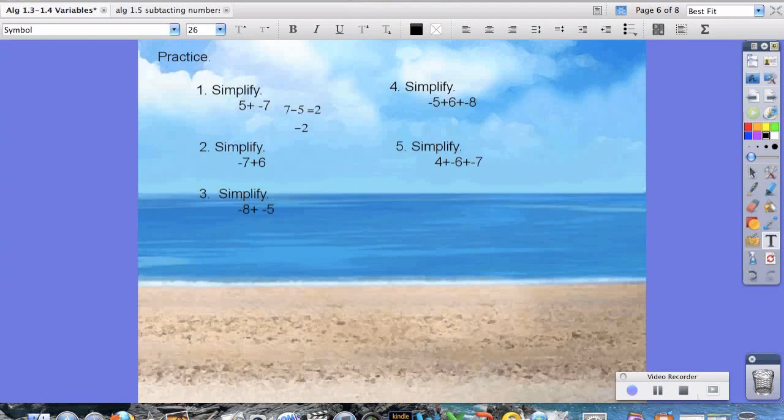Number 2, do they have the same sign? No. So we're going to find their difference. So the difference between 7 and 6 is 1. And 7 is negative, or 7 is a larger number, and it's negative. So negative 1 is your answer.